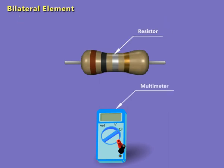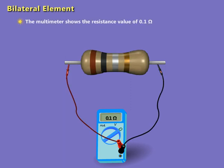Resistor. Multimeter. The multimeter shows the resistance value of 0.1 Ohm.